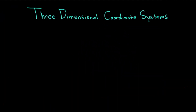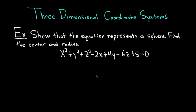Hi, everyone. It's the Mathsorcer here with Chegg. In this video, we're going to be discussing three-dimensional coordinate systems. Let's start by doing an example. The question says to show that the equation represents a sphere, find the center and radius. We have x squared plus y squared plus z squared minus 2x plus 4y minus 6z plus 5 equals 0.